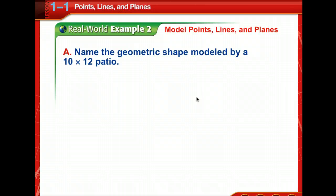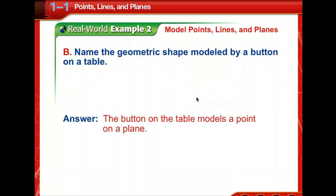Okay, let's look at a real-world example. We are to name the geometric shape modeled by a 10 by 12 patio. So think of a patio. Would that be a point, line, or a plane? That's a toughie. It models a plane, doesn't it? Flat surface. How about what's the geometric shape modeled by a button on a table? You got that one. That's a point on a plane, isn't it? A button lying on a table is a point on a plane. Alright, let's go on.